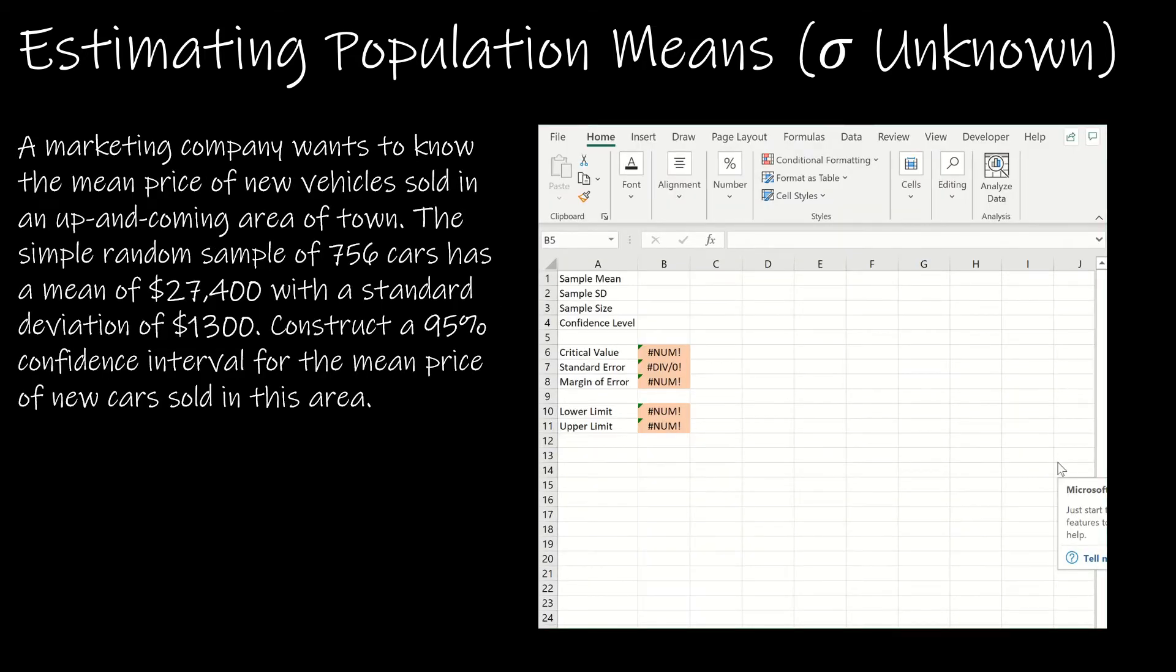Let's take a look now at how we can have Excel do all of the work for us. Again, we are given the information of the sample mean, the sample standard deviation, the sample size, and the confidence level. So these are all going to be areas that I input. But before I input anything, let's talk about the areas that I have shaded.